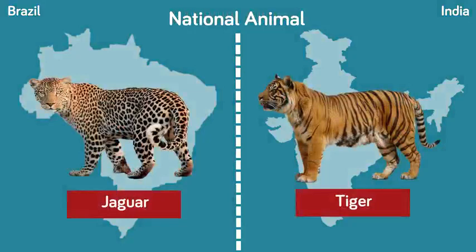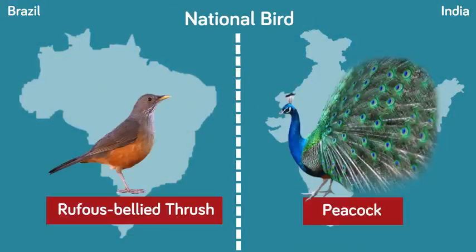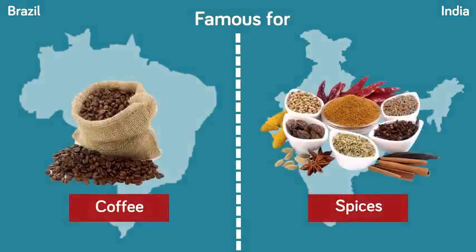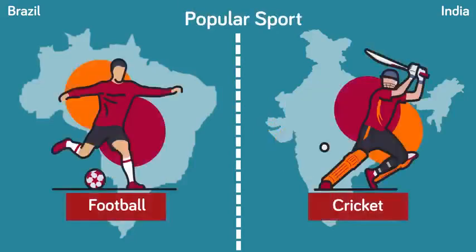The national animal of Brazil is the jaguar, and the national animal of India is the tiger. The national bird of Brazil is the rufous-bellied thrush, and the national bird of India is the peacock. Brazil is famous for coffee, while India is famous for spices. The popular sport of Brazil is football, and the popular sport of India is cricket.